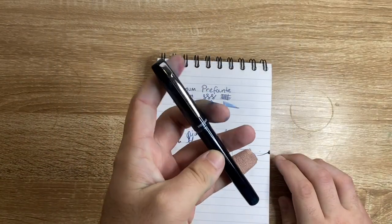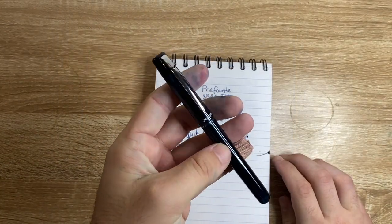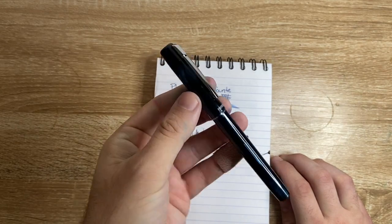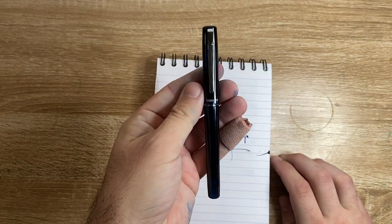So Platinum Prefonte, the new sort of budget line pen that fits between the Preppy and something like the Plaisir. The grown-up Preppy, really. I'm really impressed.